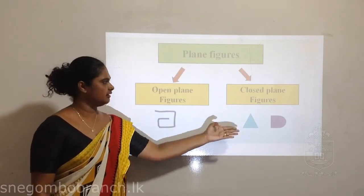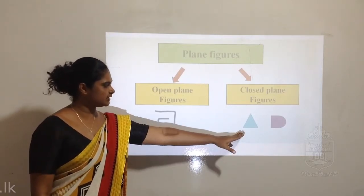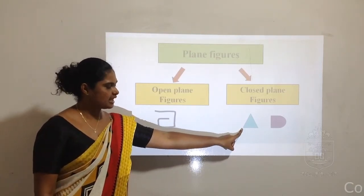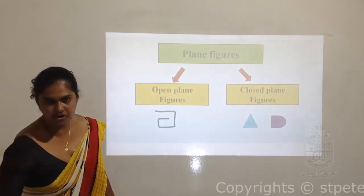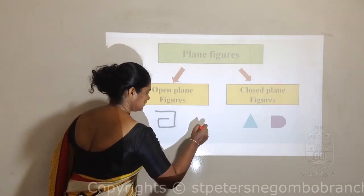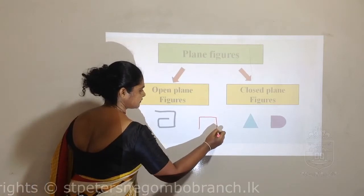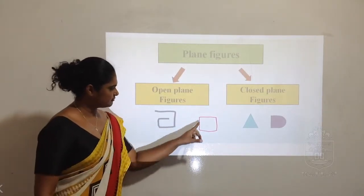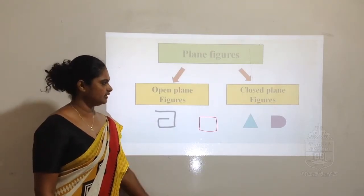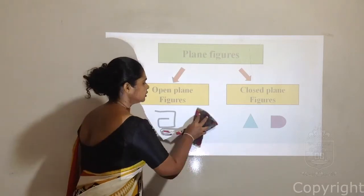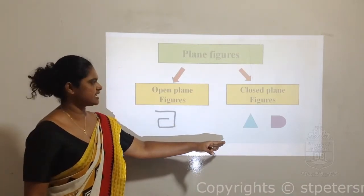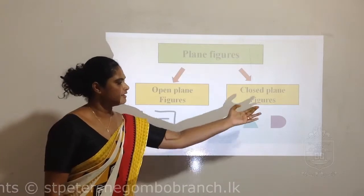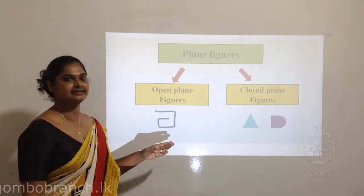Whereas the other part is the closed plane figures. They are closed - there are no openings. The starting point and the ending point is the same in the closed plane figure. Just think that I am going to draw a square - I start from here and I end with the same point. Closed plane figures can be categorized as: made only with curved lines, made only with straight lines, and made with curved lines and straight lines.